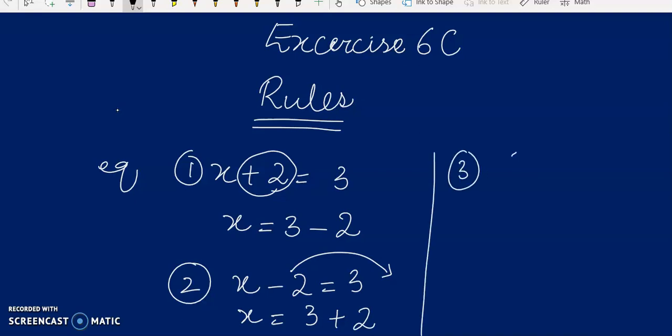Rule number 3 is, if some number is divided on one side of the equation, when it goes to the other side, it will be multiplied over there.